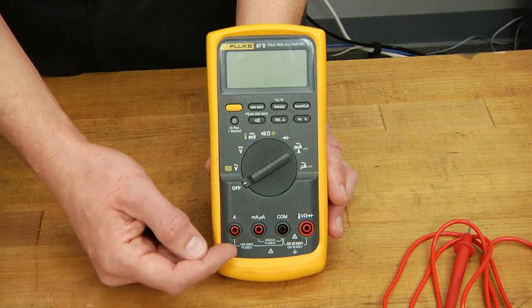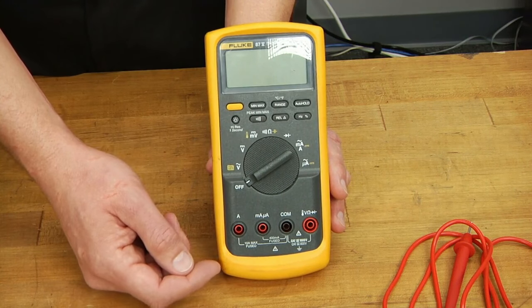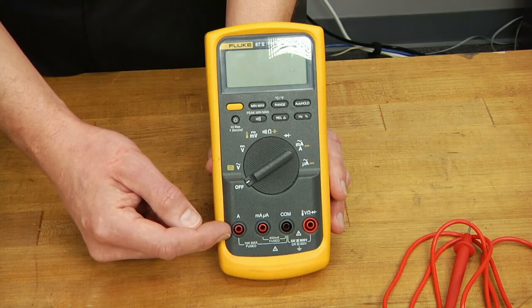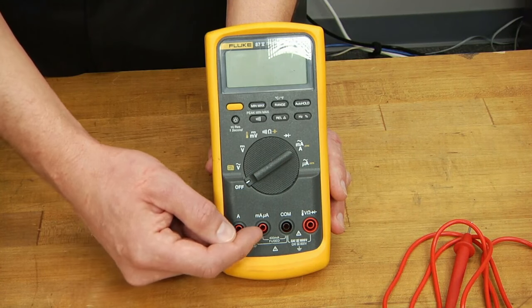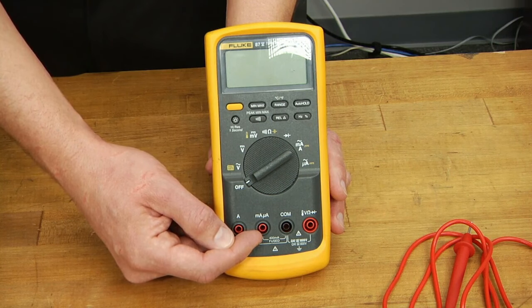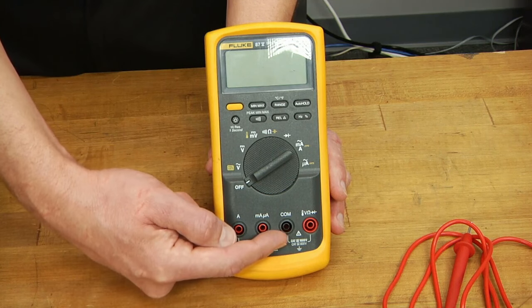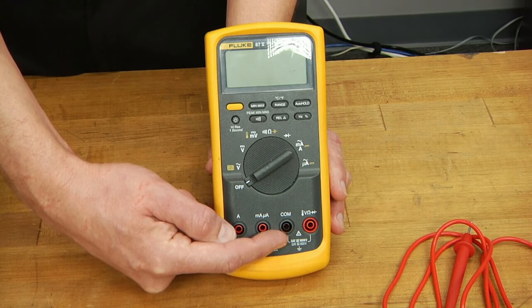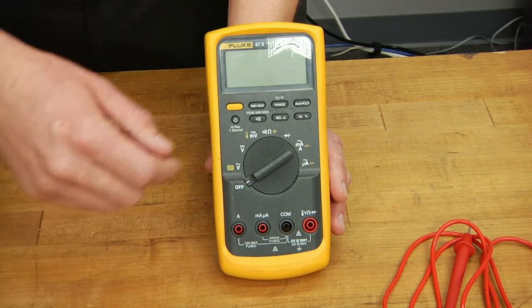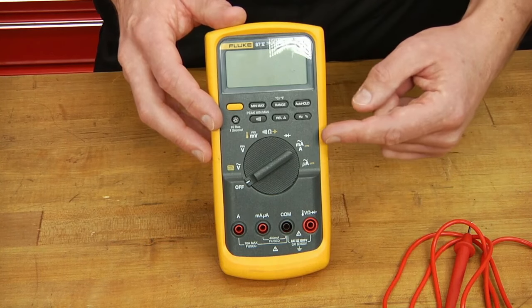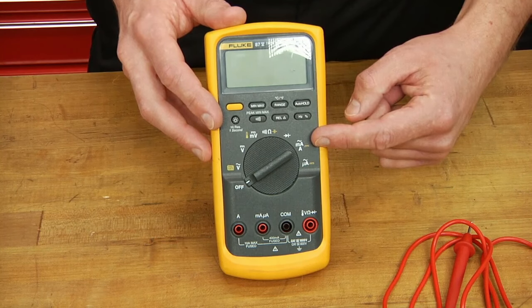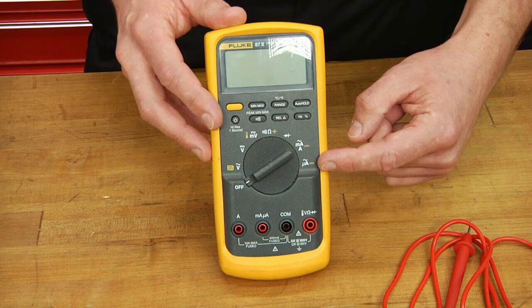As far as the input jacks are concerned, the main two that you'll be using are the amps terminal and the milliamp and microamp terminal. You will also be using the common port to complete our path. The rotary dial positions you'll be using are the milliamp amp setting and the microamp setting.